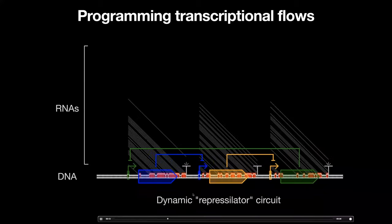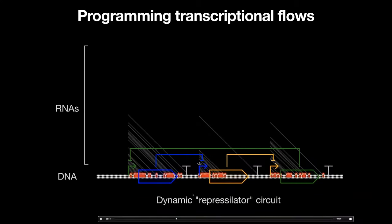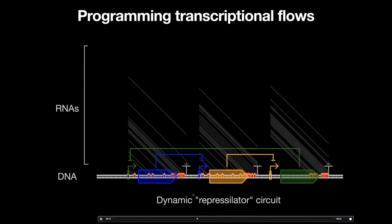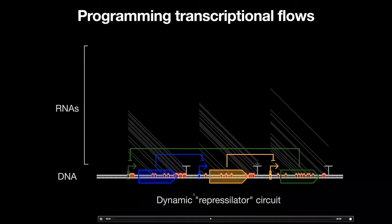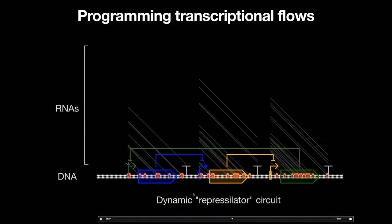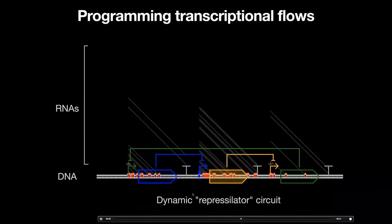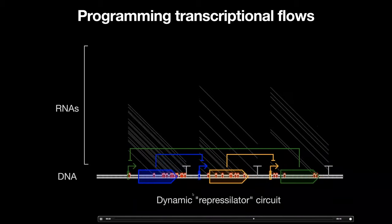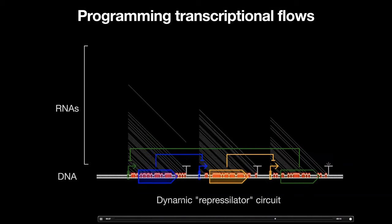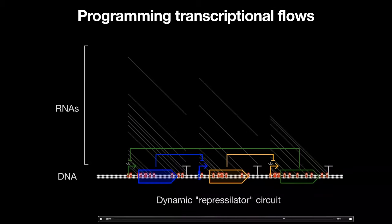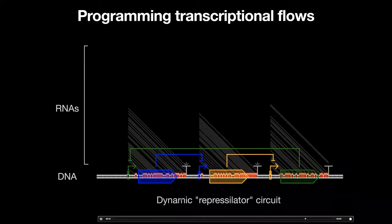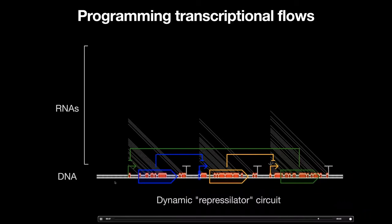Over the last two decades we've become really good at building small circuits composed of maybe a handful of regulators and regulatory links. While there have been some big steps recently in scaling the complexity of circuits — for example, automated design software like Cello — we still really struggle to create large and robust genetic systems, which is going to be crucial if we ever want to ultimately engineer entire genomes.